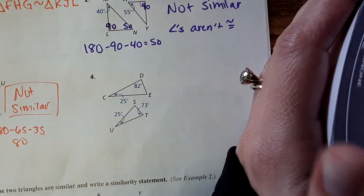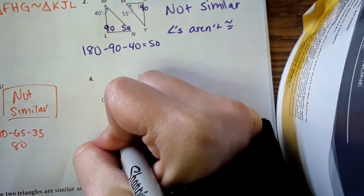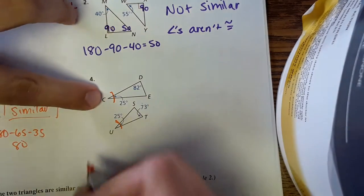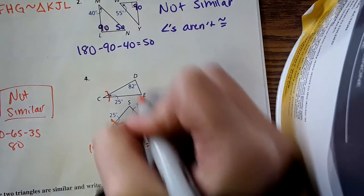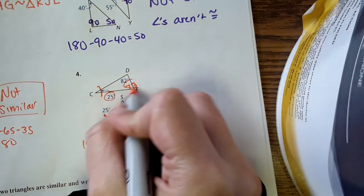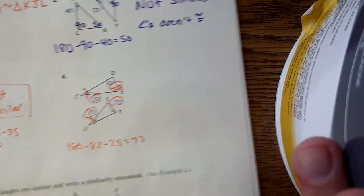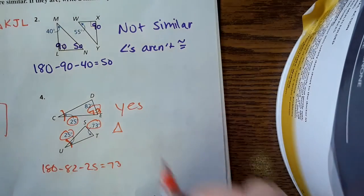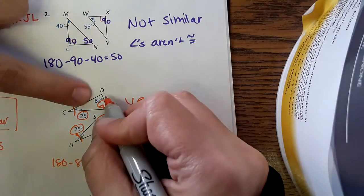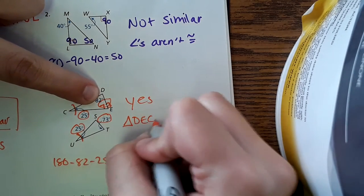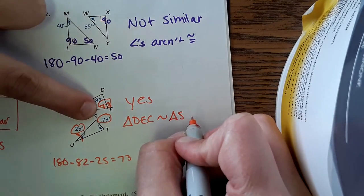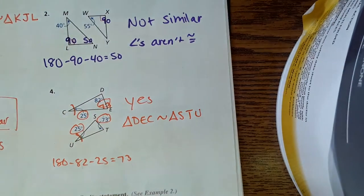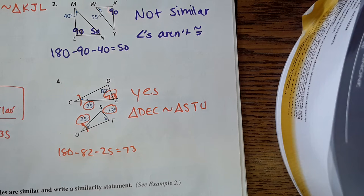Number four. Okay. We see a 25 degree angle. 25. Cool. Let's see what the third one is. 180 minus 82 minus 25 is 73. Oh, 73. Cool. We got 25, 73. 25, 73. Once you have those two matches, you're good. Yes, they are similar. And making the similarity statement, I'll say triangle DEC is similar to triangle. Starting with the 82 would be S, T, U.